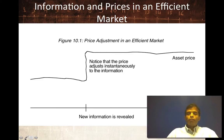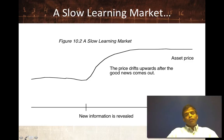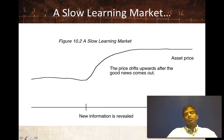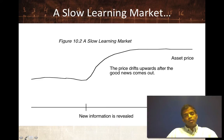How would an inefficient market look? Well, it depends. If you have a slow learning market and good news comes out about a stock, the price will go up, but rather than go up instantaneously, it'll drift up gradually over time. Over how much time? That depends on how inefficient the market is — it could be two hours, it could be two weeks, it could be two months. The more inefficient a market, the longer it takes for the price to adjust to the new value. Eventually it reaches the same steady state, but it takes a while to get there. So in a slow learning market, you have a drift upwards after good news and a drift downwards after bad news.